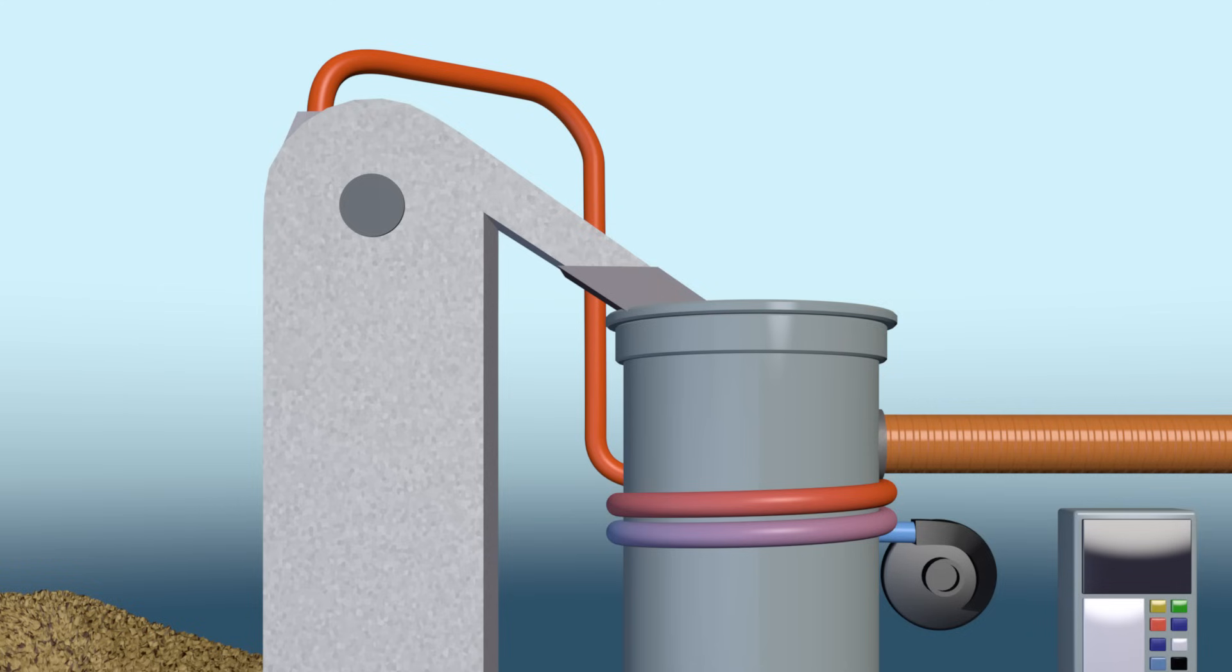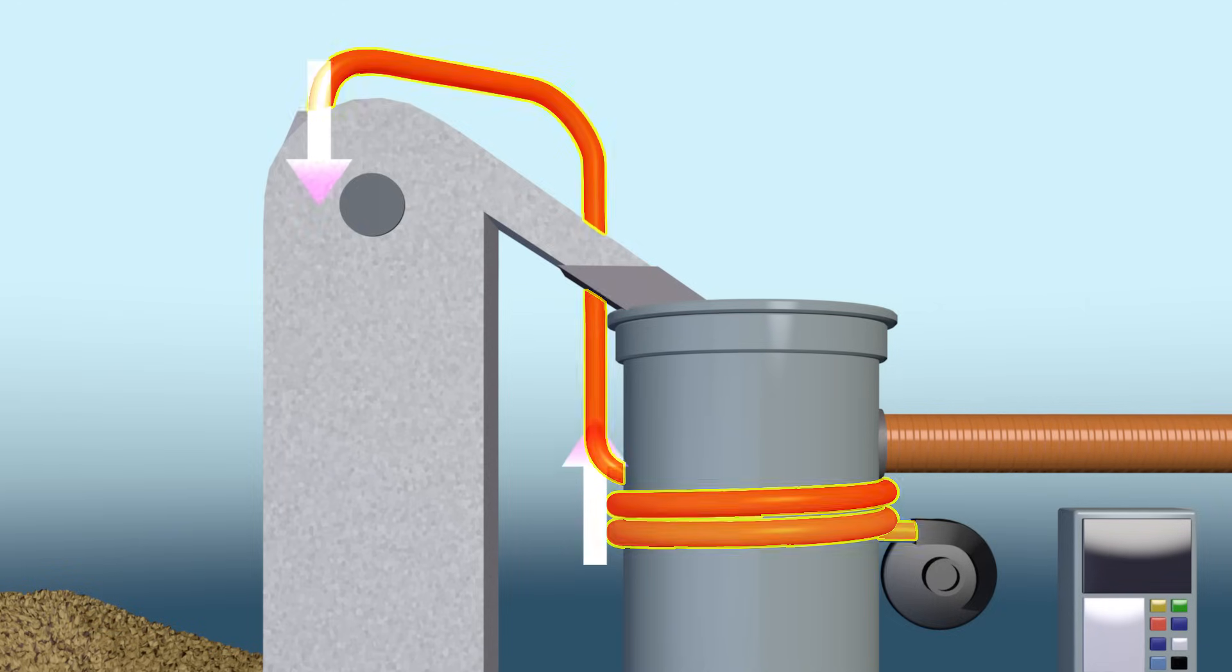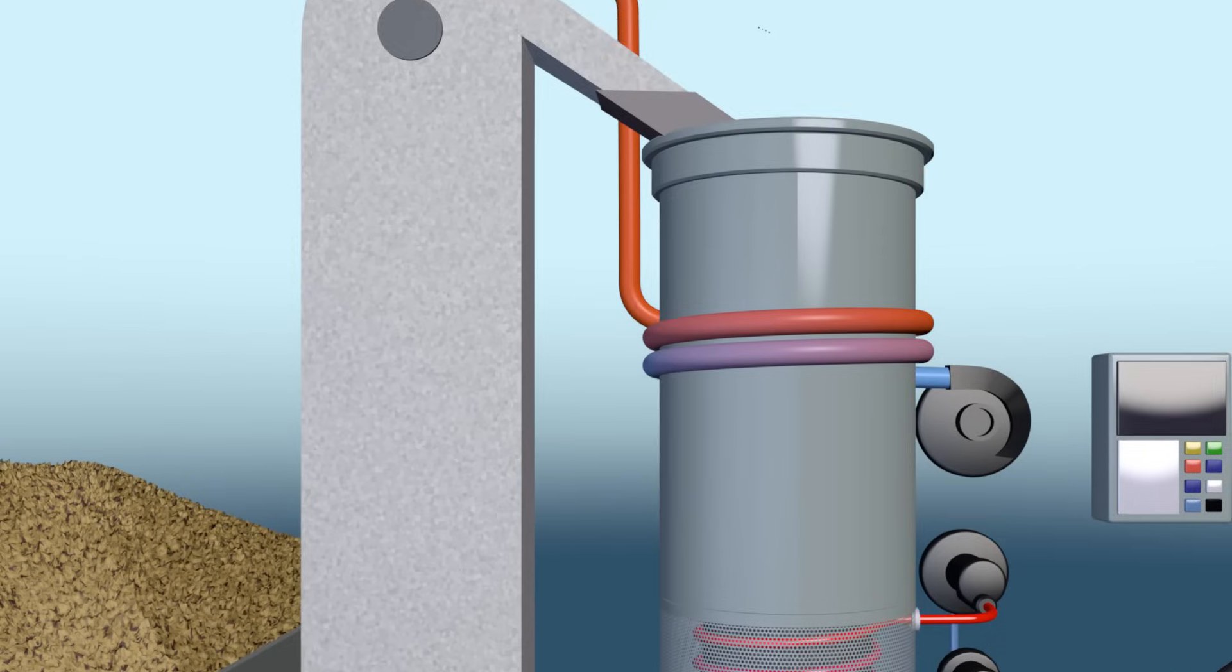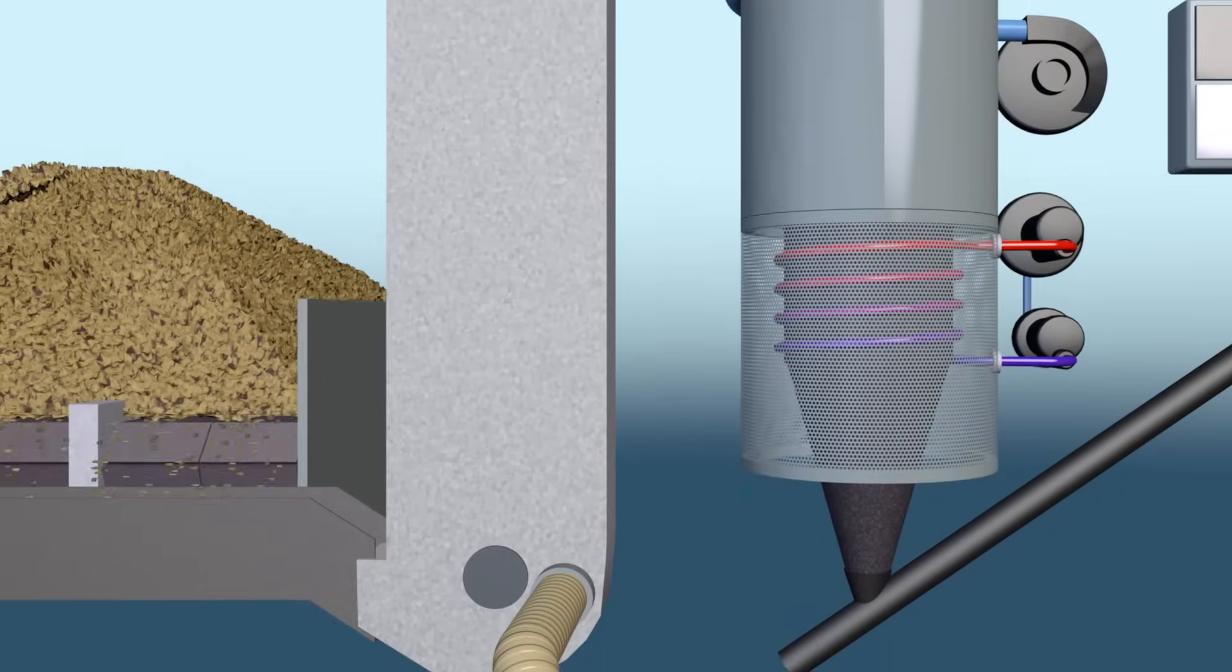In order to maximise the efficiency of the pyrolysis process, hot air taken from the coat of the reactor is used in the biomass pre-drying process. Hot air is transferred to the bucket feeder, which was illustrated some time ago.